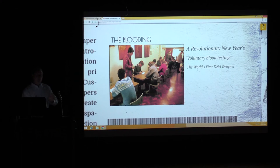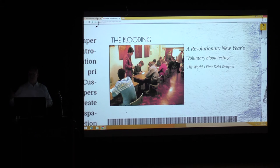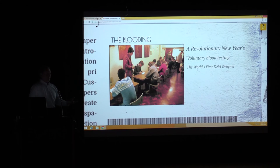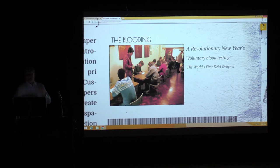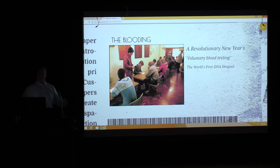All those with Group A secretor blood type were tested independently by both Dr. Jeffries and the Home Office laboratories. About 10% had that blood type and went for DNA testing. It ended up being over 5,000 blood tests — it took a very long time. This was the world's first DNA dragnet.